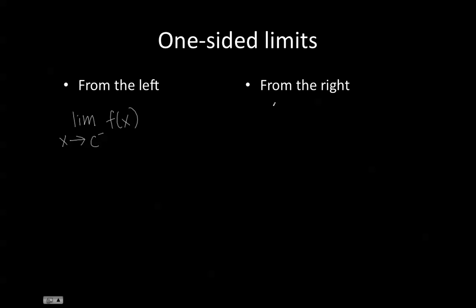For one-sided limits from the right, we write the notation as the limit as x approaches c with a small positive sign, to show that we're talking about values of x that are on the positive side of c.